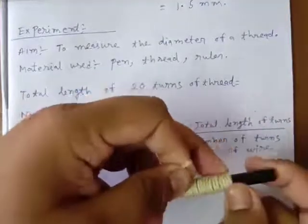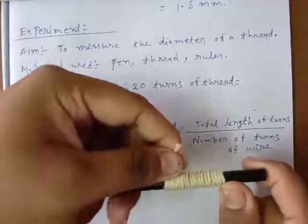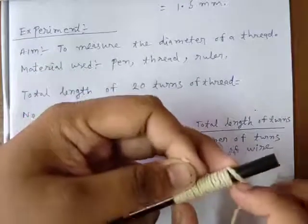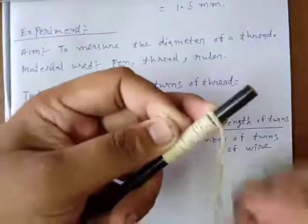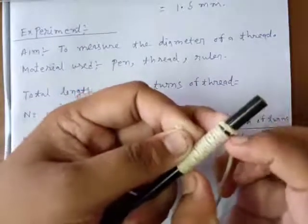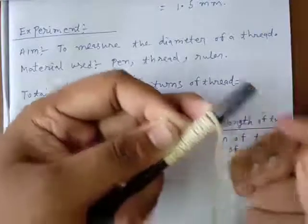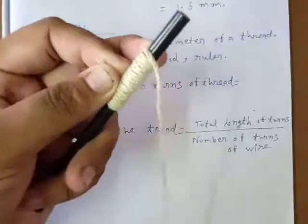Now, I have completed 20 windings. So here is 20 windings. Now, measure this length. Measure the total length of the turns and then divide it by the windings number.